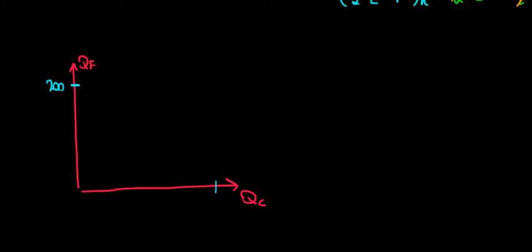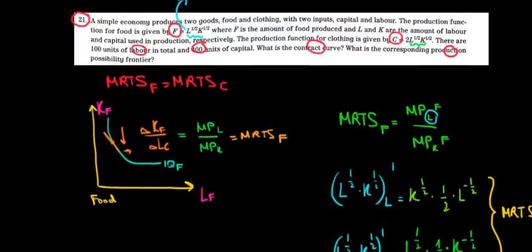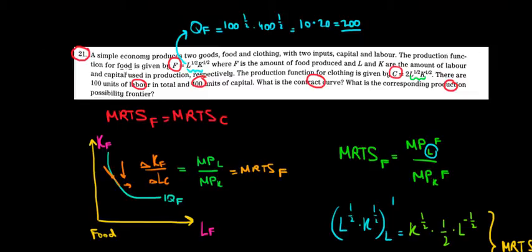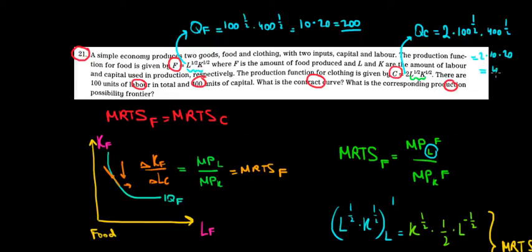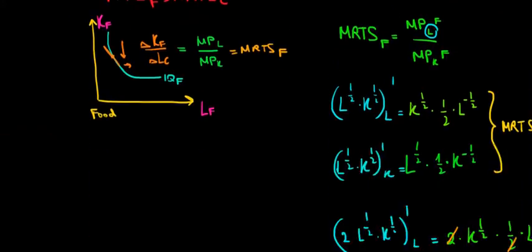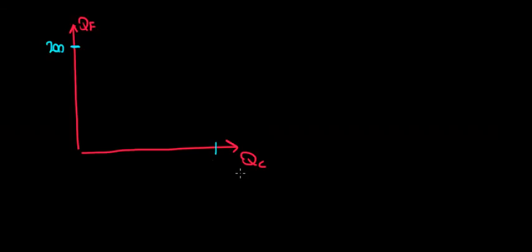Now for the maximum quantity of clothing: using the clothing production function, the quantity of clothing equals 2 times 100 to the power one-half times 400 to the power one-half, which is 2 times 10 times 20, so 2 times 200 equals 400. That is the maximum amount of clothing we can produce if we employ all the labor and capital, giving us 400 as our second intercept.